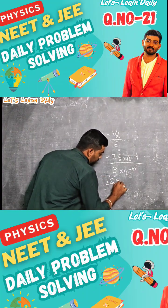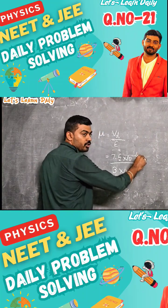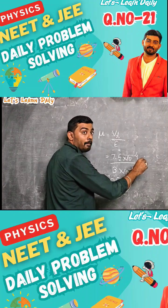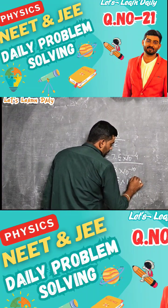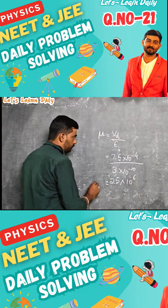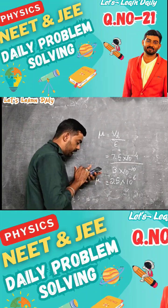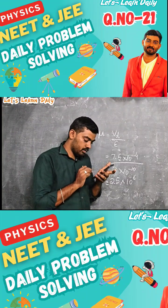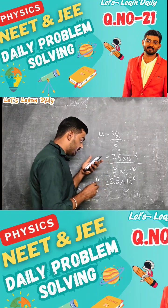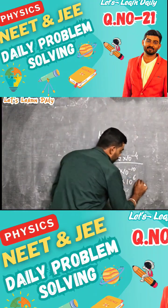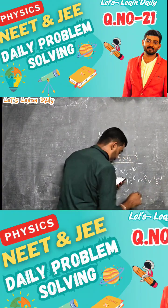We get 2.5×10⁻⁴ divided by 10⁻¹⁰, so the answer would be 2.5×10⁺⁶. This will be your answer, option 2.5×10⁶, with units meter squared, V⁻¹, s⁻¹.